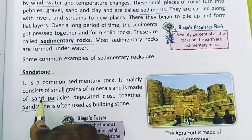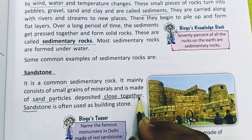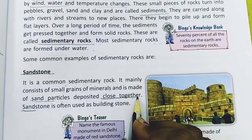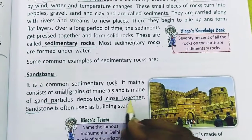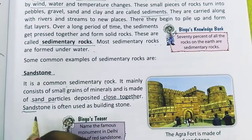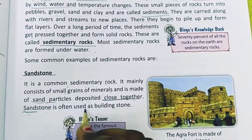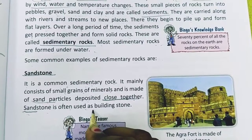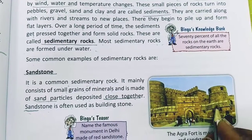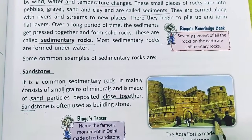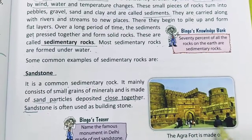It is called sandstone because the sand particles are combined with one another. Sandstone is often used as a building stone.